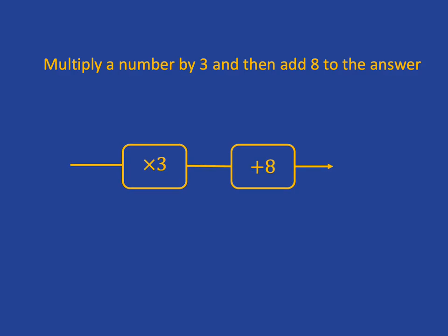Now we're going to do that same thing, but now we're going to use x to stand for any number. So we start with x and we feed it through the machine that multiplies by 3, and we get out 3x. Then we take that 3x and we feed it through the machine that adds 8.